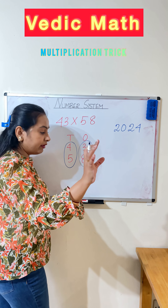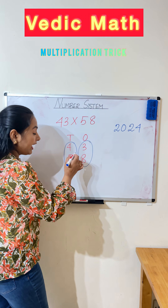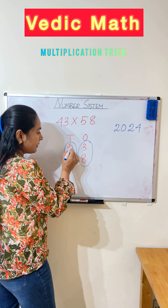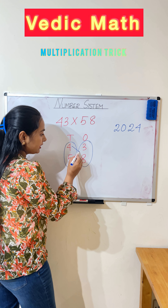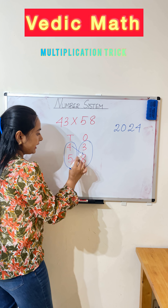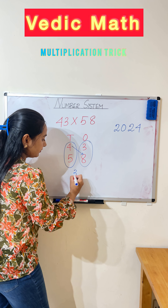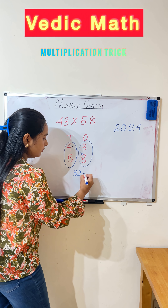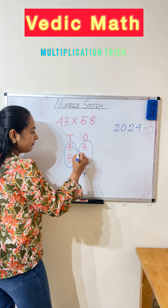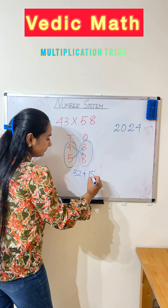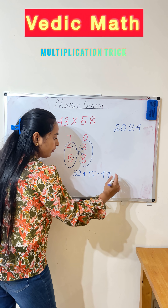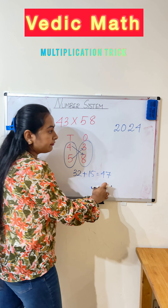Now, what we need to do? We have to cross multiply. Means the units place number multiplied with the tens place number: 4 eights are 32, then plus 5 threes are 15. We are getting 47 from here.